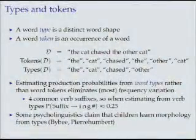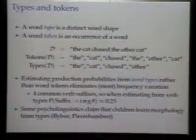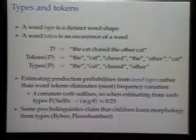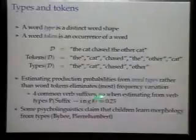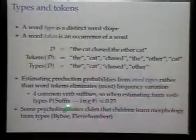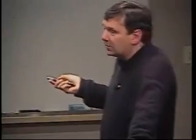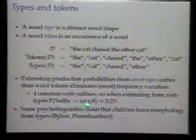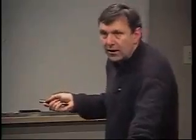One way of dealing with this — and I'm a little afraid this is throwing the baby out with the bathwater — is to estimate the production probabilities from word types rather than tokens. The idea is that this will eliminate most of the frequency variation. For example, if there were four common verb suffixes and we were estimating from verb types, pretty much every verb is seen with each of these suffixes. The probability of a suffix would be around 0.25. A number of psycholinguists have claimed that children learn morphology from types rather than tokens.